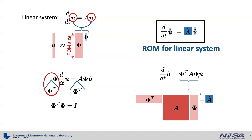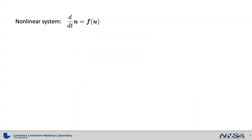This guarantees that this form of reduced order model will achieve a tremendous speedup with respect to the corresponding full order model. Now let's look at a nonlinear problem, which is described by a system of ordinary differential equations with nonlinear function f on the right-hand side. As in the linear system case, we introduce the solution approximation as a linear combination of the reduced basis, represented by phi times u hat.